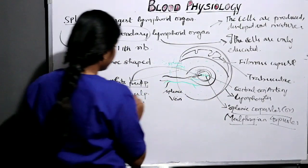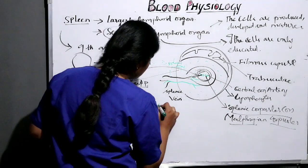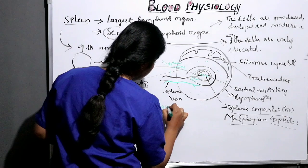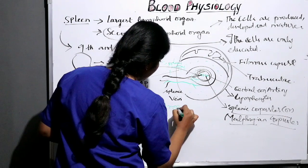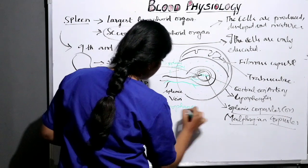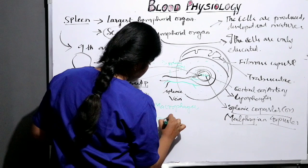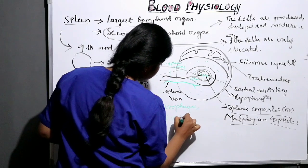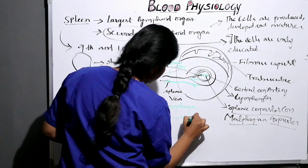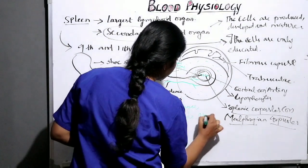The spleen consists of two types of pulp: white pulp and red pulp. White pulp acts as the major lymphoid site, consisting of Malpighian corpuscles, splenic corpuscles, and the central artery. Red pulp consists of macrophages, blood vessels, etc.